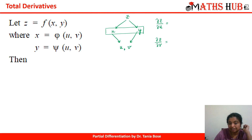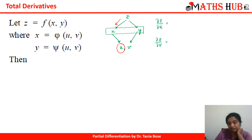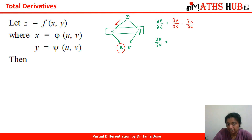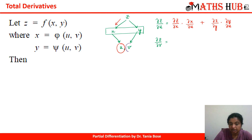To find ∂z/∂u, we use two channels: the derivative of z with respect to x and then x with respect to u, plus the derivative of z with respect to y and then y with respect to u. This gives: ∂z/∂u = (∂z/∂x)(∂x/∂u) + (∂z/∂y)(∂y/∂u).